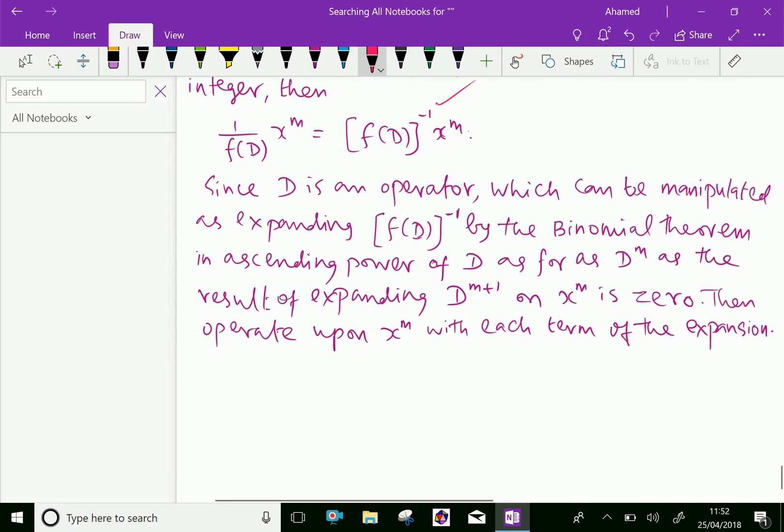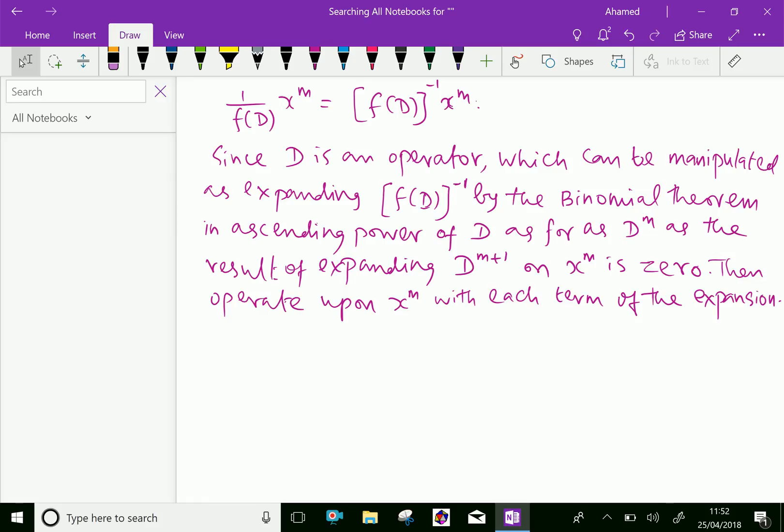Since D is an operator which can be manipulated, expand f of D power minus 1 by the binomial theorem in ascending powers of D as far as D power m, as the result of expanding D power m plus 1 on x power m is zero. Then operate upon x power m with each term of the expansion.